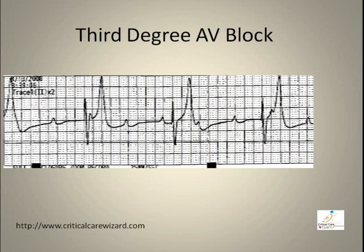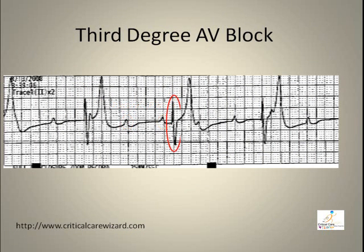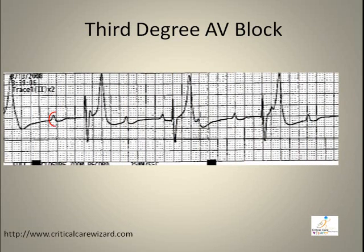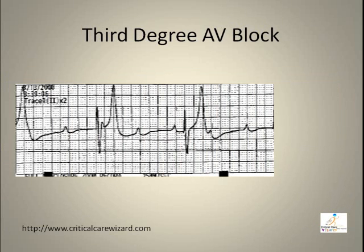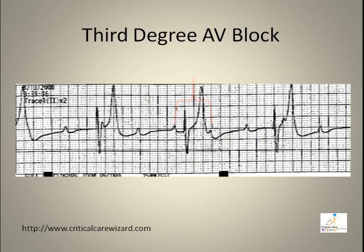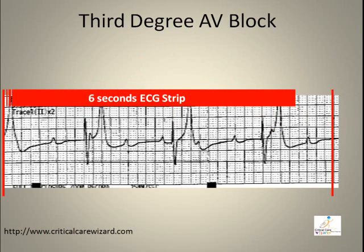In third degree AV block, the P-wave is present with no established relationship to the QRS. The PR interval is unable to be determined, with no established relationship to the QRS. The atrial and ventricular rhythm is regular, but the atrial rate and ventricular rate are not the same.